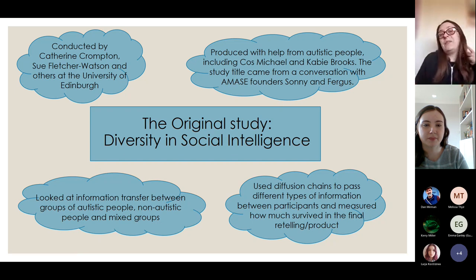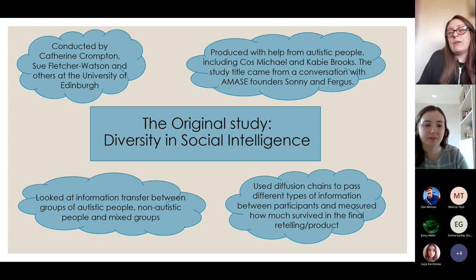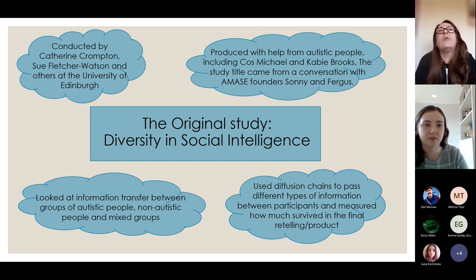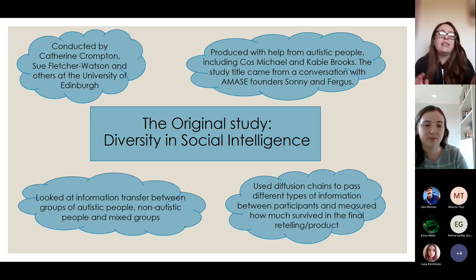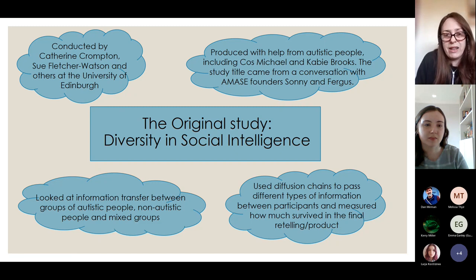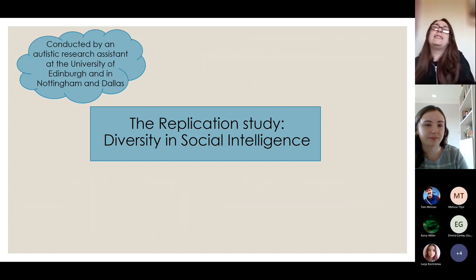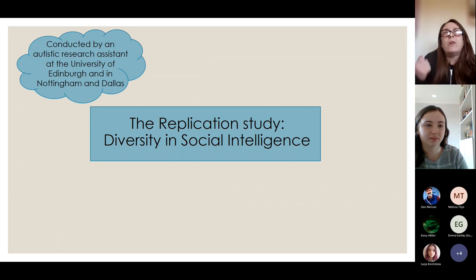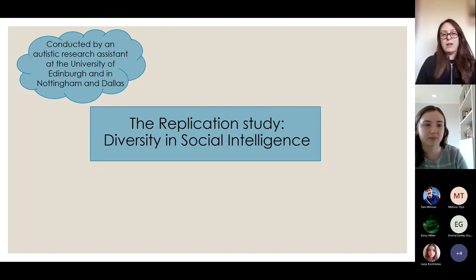This was huge news to autistic people and non-autistic people who care about autistic people. It's basically saying that we don't have communication deficits — which is all part of the message that we're not broken people, there's nothing wrong with us, we just do things slightly differently. Neither way is better or worse than the other, so we need to replicate these findings to give the Double Empathy theory a bit more weight.